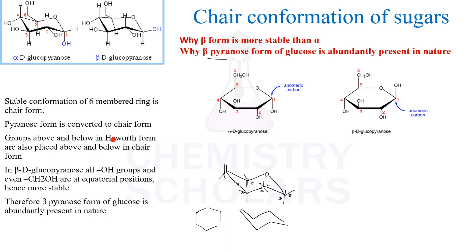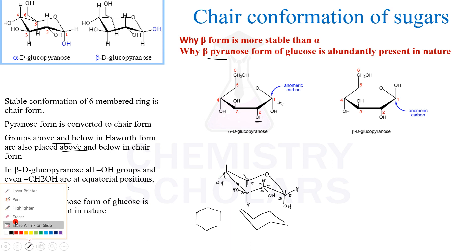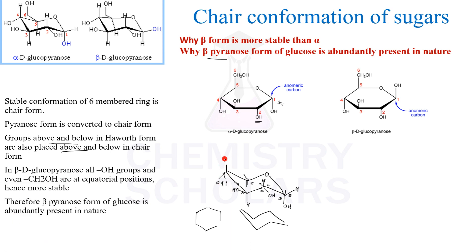What you need to remember is that groups which are above and below in the Haworth form are also placed above and below in the chair form. Starting with the anomeric carbon atom: the OH group is down, H is up. Second carbon: OH is down. Third carbon: OH is up, so it goes on the equatorial. Fourth carbon: OH is down. Fifth carbon: H goes down. And the sixth carbon has CH2OH, which you can place equatorially. This was the alpha form.